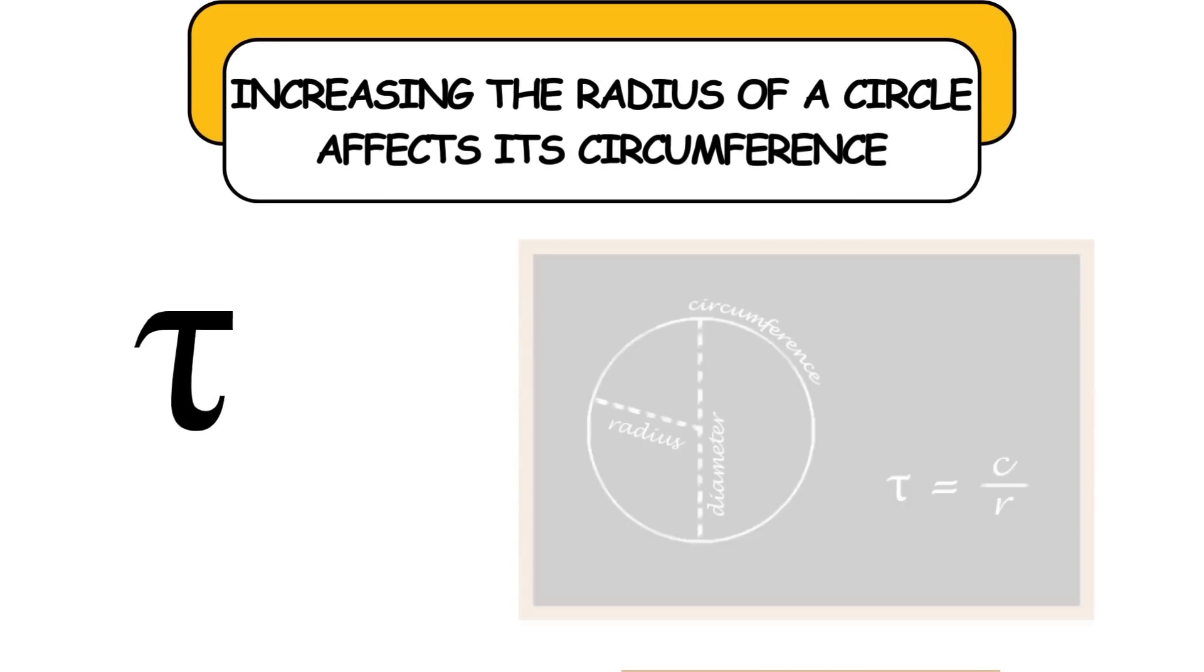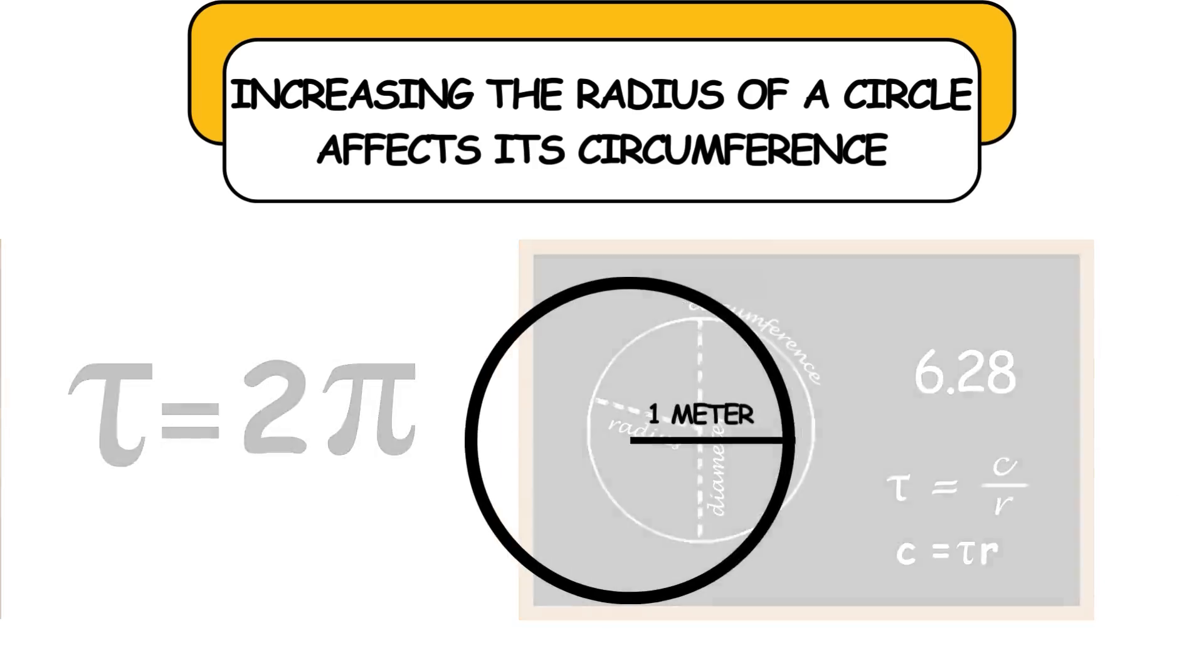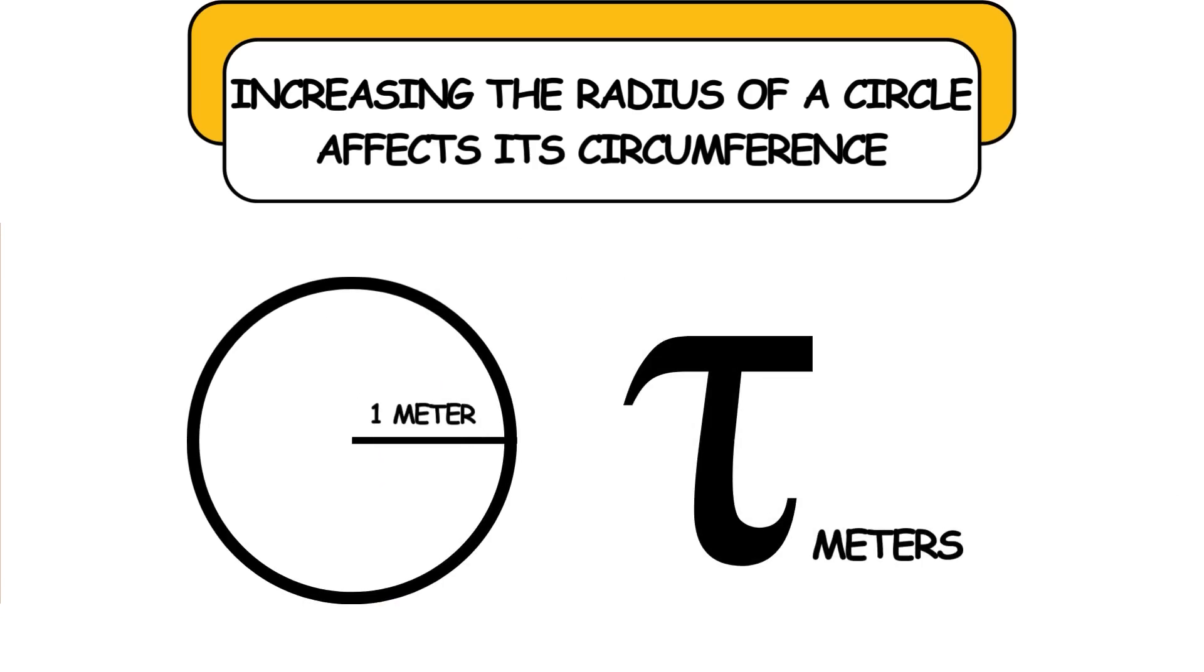Let's see how increasing the radius of a circle affects its circumference. We will use tau, the ratio of a circle's circumference to its radius, about 6.28, and equal to 2 times pi. A circle's circumference is tau times the radius. A circle with a radius of 1 meter has a circumference of tau meters, about 6.28 meters.